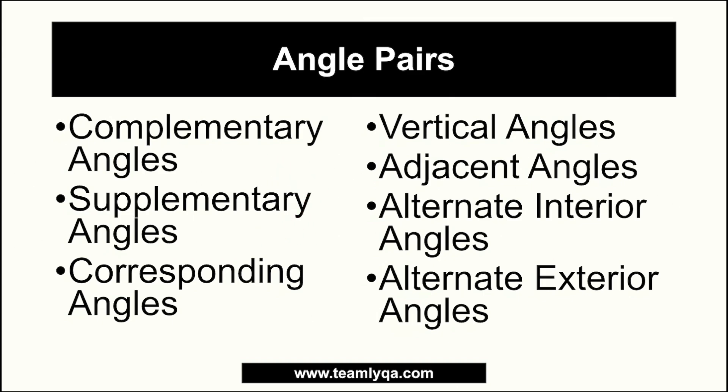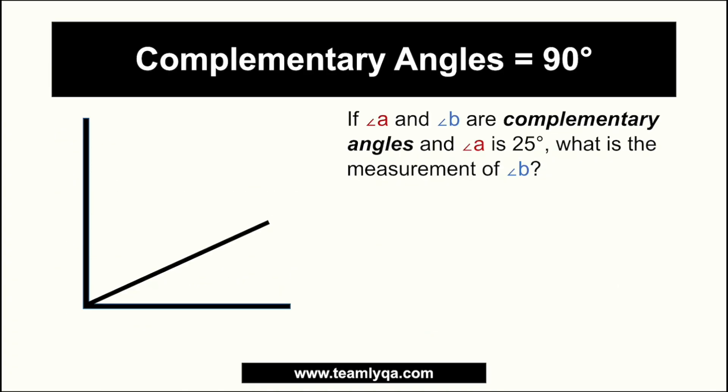Some angle pairs have relationships based on the measurement of the angle. Two of those we're going to talk about today are complementary angles and supplementary angles. The others involve both position and measurement — a bit more complicated — but we'll talk about those in the next video. These two are also part of the reason why other angle pairs that are congruent exist. Let's start with the most basic: complementary angles.